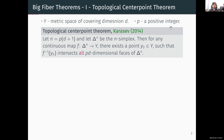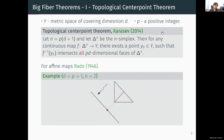The theorem states that for any continuous map from the n-simplex to such a space Y of dimension d, there exists a fiber that intersects all the pd-dimensional faces of the simplex. For affine maps this goes back to Rado, but in this formulation with continuous maps it is due to Karasov in 2014. As an example, with the two-simplex projected to a one-dimensional line, there is a point such that the fiber — drawn as a red segment — meets all three one-dimensional faces of the simplex.